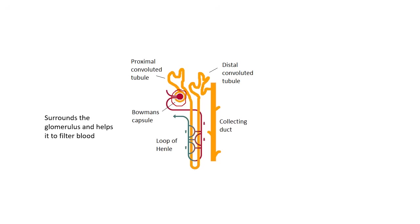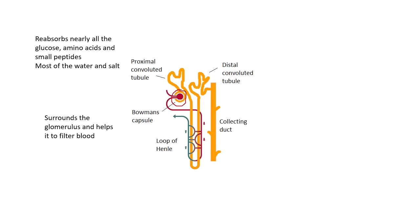The proximal convoluted tubule reabsorbs nearly all of the glucose — about 95% — most of the amino acids and small peptides, and most of the water and salt. Most of the stuff is reabsorbed in the proximal convoluted tubule. What is left goes then into the loop of Henle, where more water and sodium chloride are also reabsorbed.